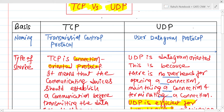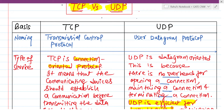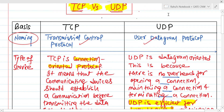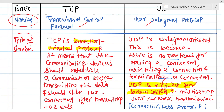We are just revising very quickly about TCP vs UDP. You already know that TCP is Transmission Control Protocol. On the basis of naming convention, if I differentiate it, TCP is Transmission Control Protocol and UDP is User Datagram Protocol.